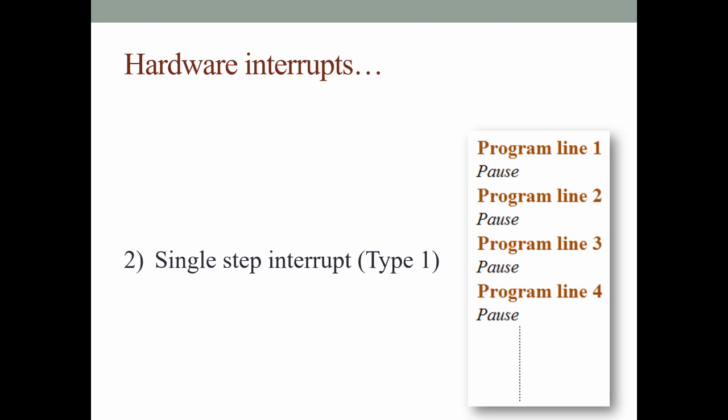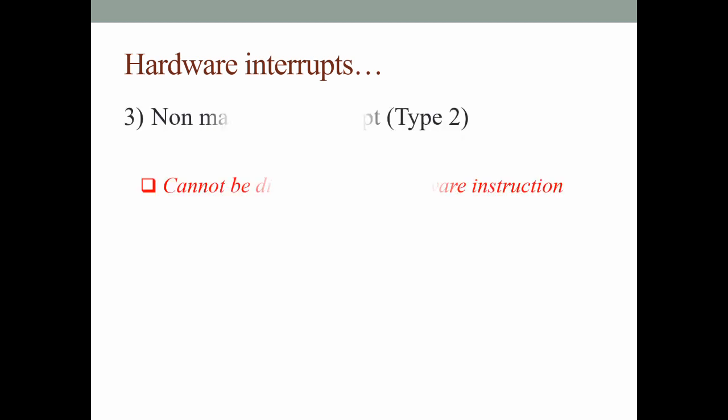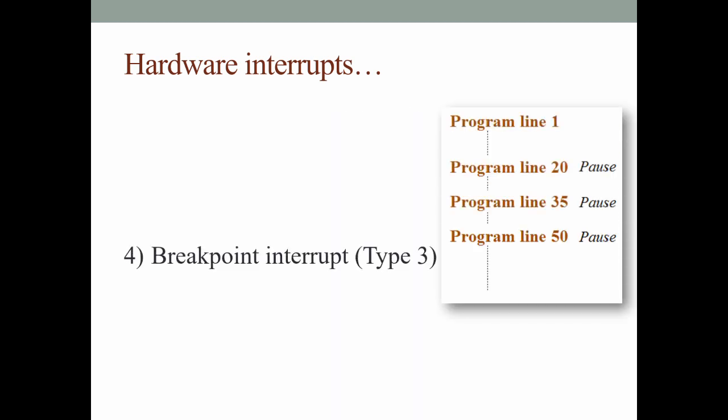This interrupt is set up by giving logic 1 to the trap flag. The third one is the non-maskable interrupt. This interrupt is also known as a type 2 interrupt, and this cannot be disabled by any software instruction.